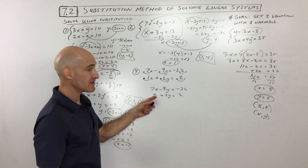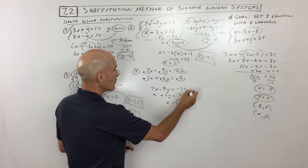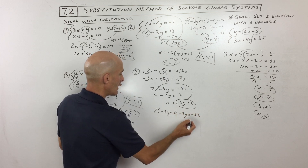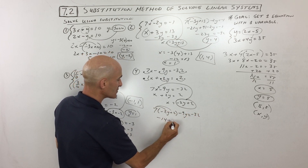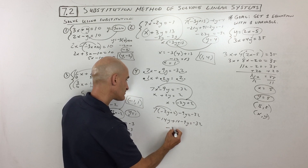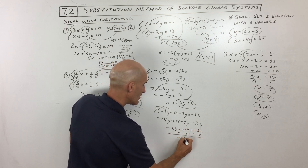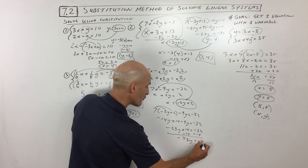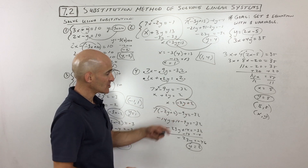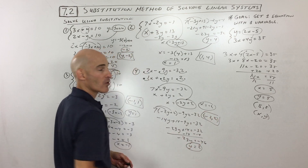Which variable should we solve for? This one right here — the x — is going to be the easiest. So now we know what x equals, and we put it in for x in the other equation: 7 times what x equals. We're getting negative 14y plus 14, minus 9y equals negative 32. That comes out to negative 23y plus 14 equals negative 32. Subtract 14 from both sides: negative 23y equals negative 46. Divide by negative 23: y equals 2. If we put 2 back in: negative 4 plus 2 equals negative 2. So our final result is negative 2 comma positive 2 — x comma y, alphabetical.